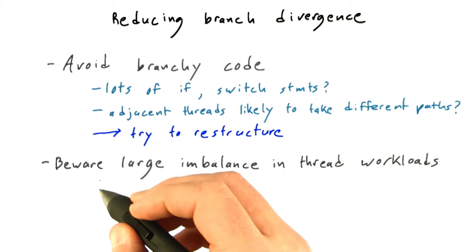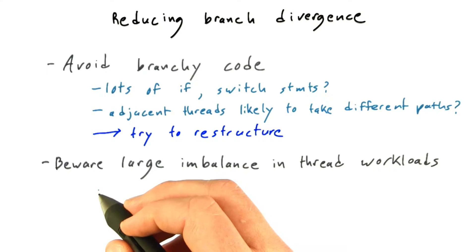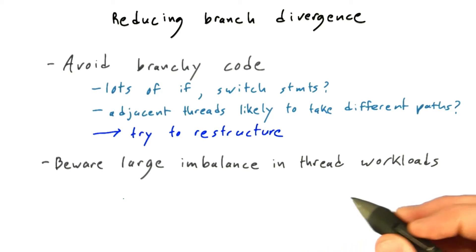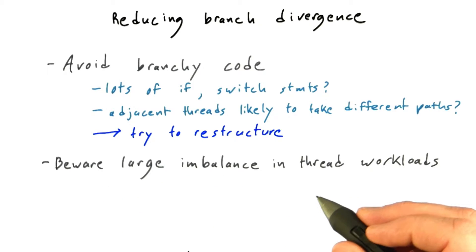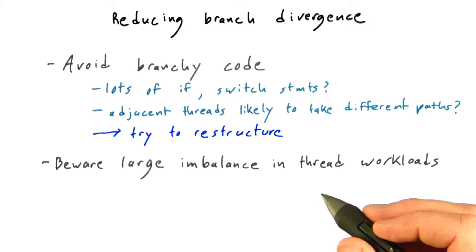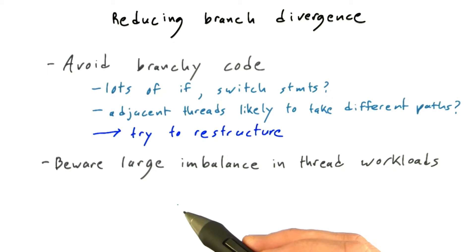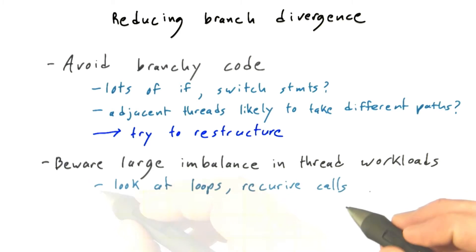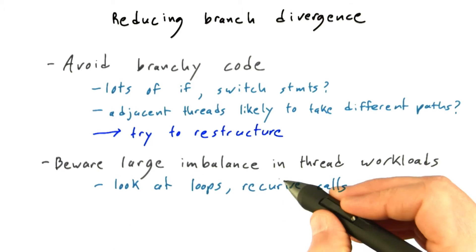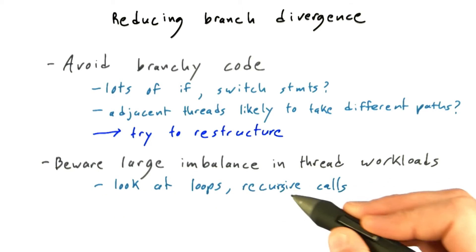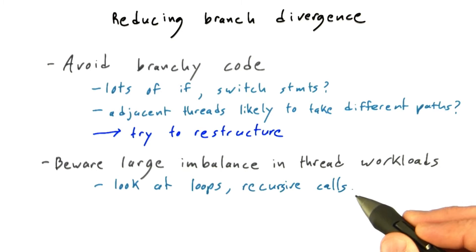The second general principle is to beware large imbalance in thread workloads. Sometimes one thread can take much, much longer than the average thread to complete a task. When this happens, the long-running thread can hold up the rest of the warp or even the rest of the thread block. So look carefully at loops and recursive calls to decide if this kind of work imbalance might be hurting you.